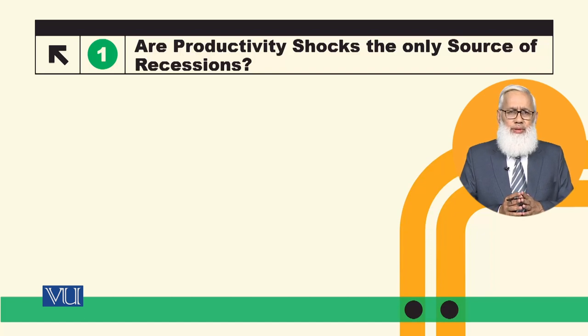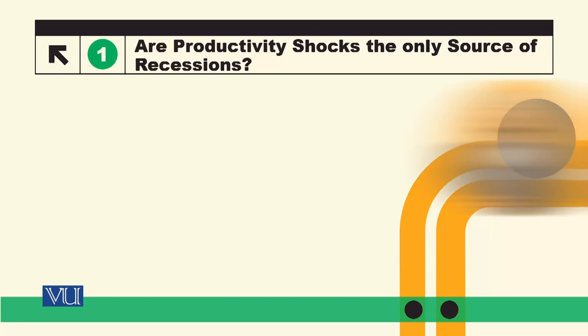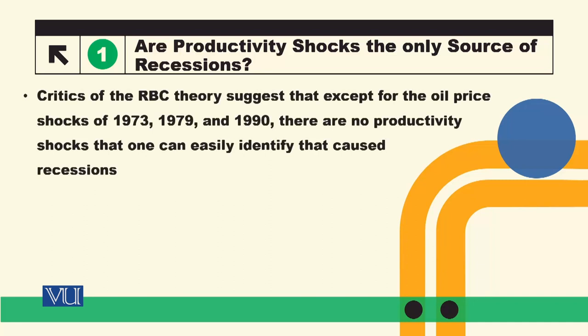but in RBC the major shock is the productivity shock. There are a lot of recessions in the economy — for example, the recessions in 1973, 1979, and 1990 — where there are no productivity shocks that one can easily identify as the cause.